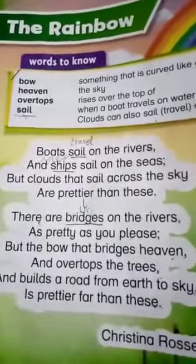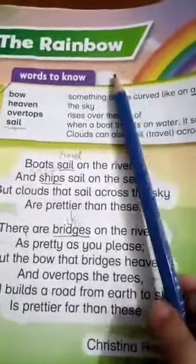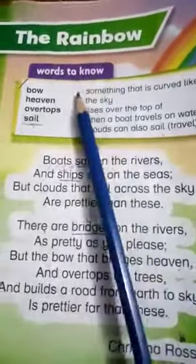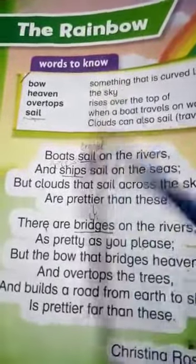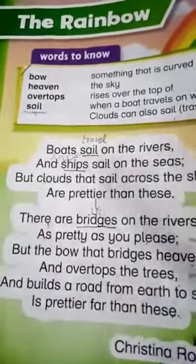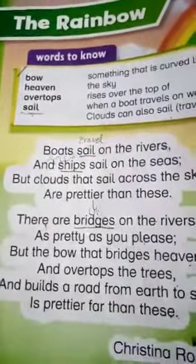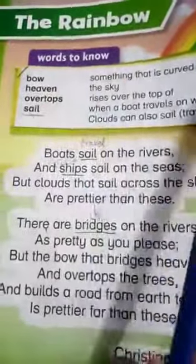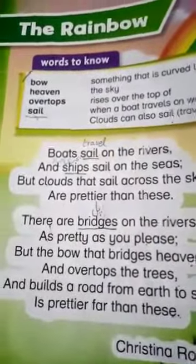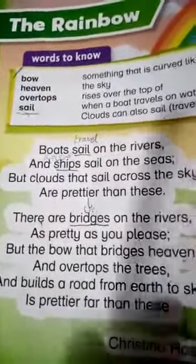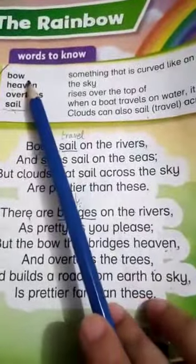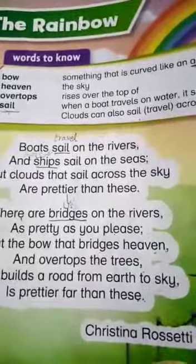In the previous lecture, we learned about the words which are helpful to reading this poem, which is the rainbow. The first one is 'bow' — something that is curved like an arch.